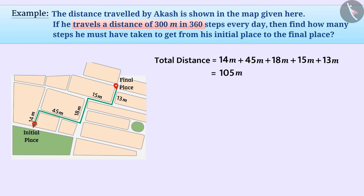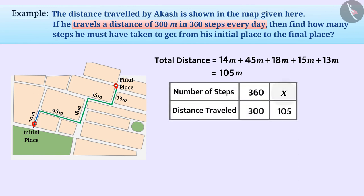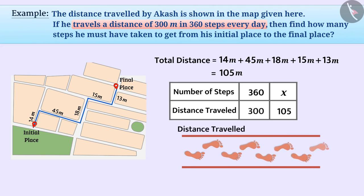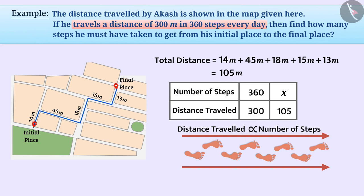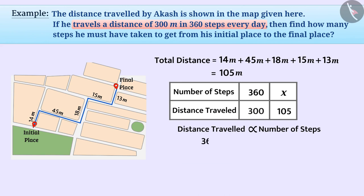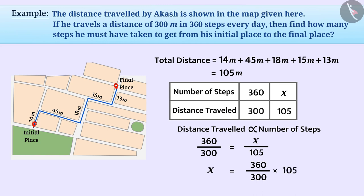We can show the given situation like this, where x represents the number of steps required to cover 105 meters. We know that the ratio with which the distance travelled increases, the number of steps also increases in the same ratio. Therefore, the distance and the number of steps are directly proportional. So 360 divided by 300 equals x divided by 105, meaning x equals 360 divided by 300 multiplied by 105 steps, which equals 126 steps.